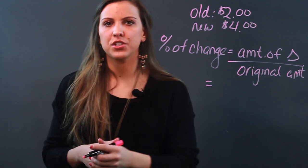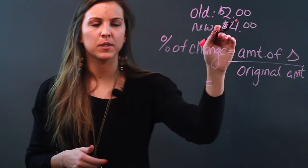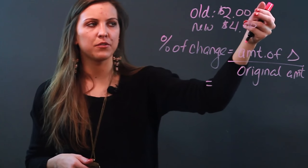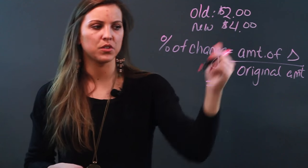My amount of change, well how do you figure out the amount of change between something? You just subtract the two values. So the amount of change here is two dollars, four minus two is two, so I'm going to replace my numerator with two.